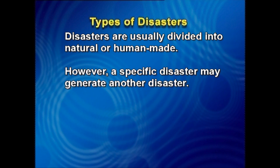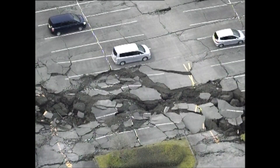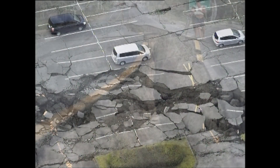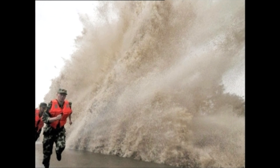However, a specific disaster can generate another disaster. For this reason, disasters are classified as primary disasters and secondary disasters. The initial disaster is called the primary disaster and the subsequent disaster is called the secondary disaster.